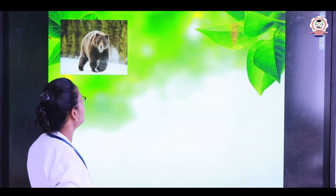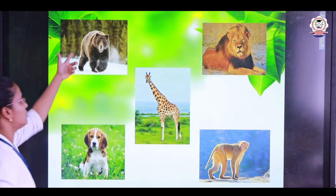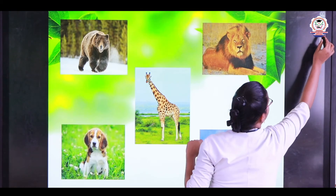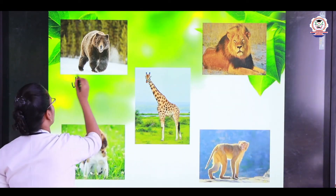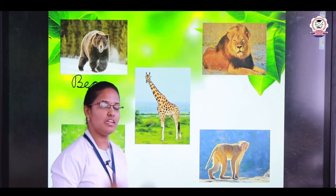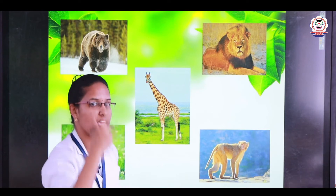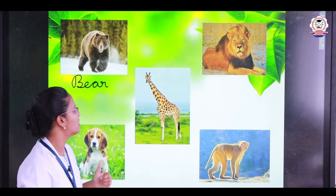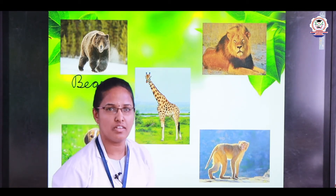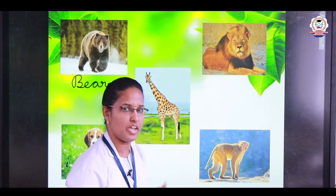Here we have some more examples of land animals. The first is bear — B-E-A-R. Bear is a very intelligent animal. They have an extraordinary sense of smelling, hearing, and seeing. We can see these animals in forests, zoos, and some other places. Wild animals can be seen in forests and zoos.